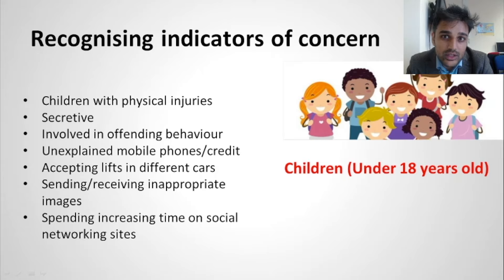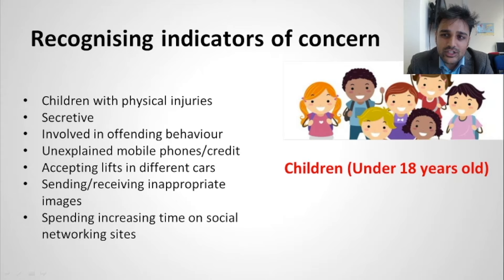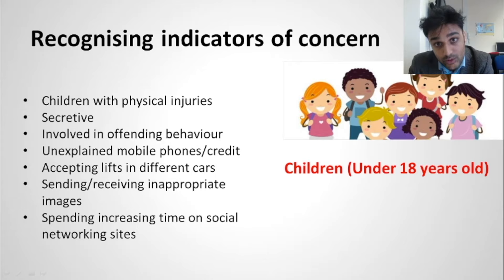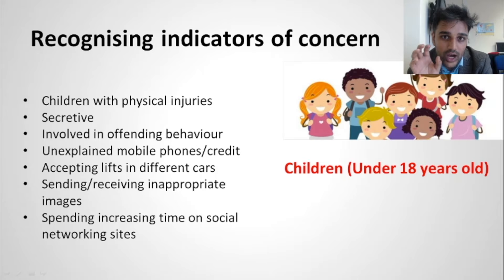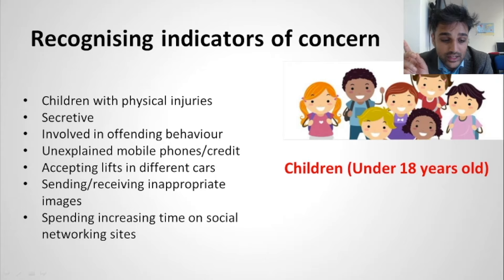Children with physical injuries — if a child gets in your car with a bruise on their arm, report it. If they're secretive and don't want to talk, report it to the police or MASH. If they're involved in offending behavior — swearing, being racially abusive — they may be crying out for help. Unexplained mobile phones or credit: kids with two or three phones, report that. Accepting lifts in different cars, sending and receiving inappropriate images, spending increasing time on social media — all of these should be reported.